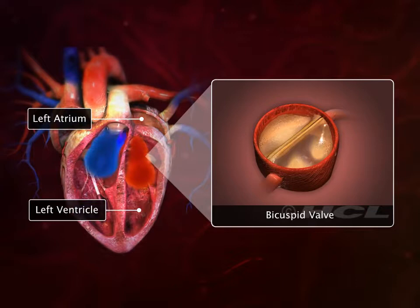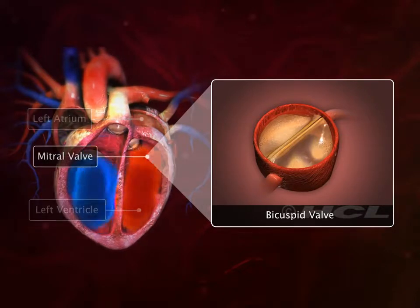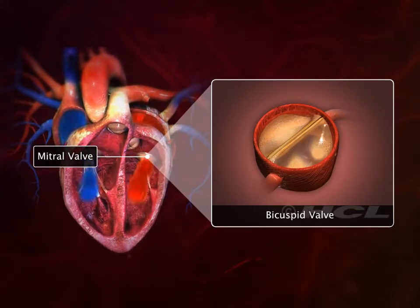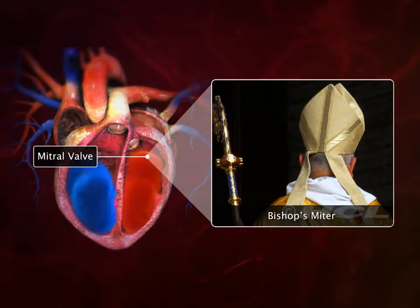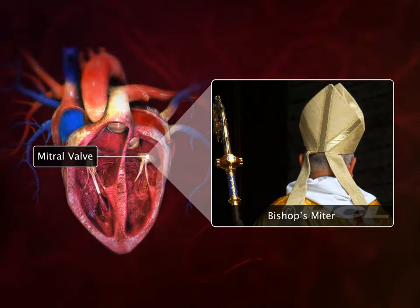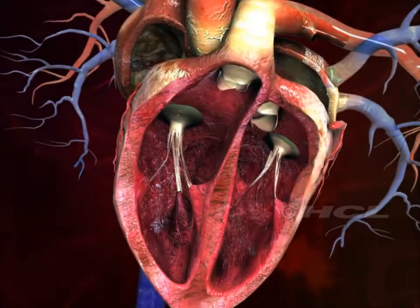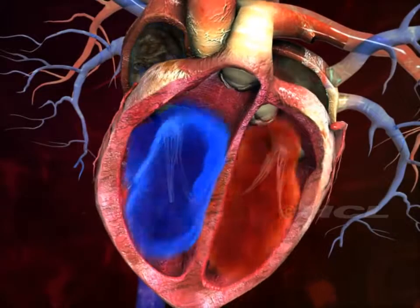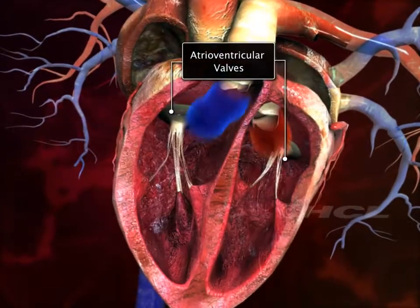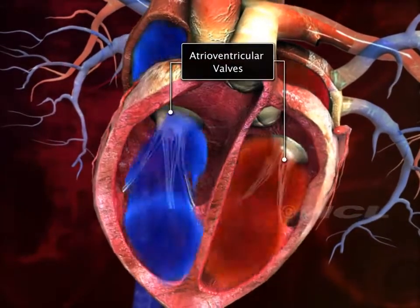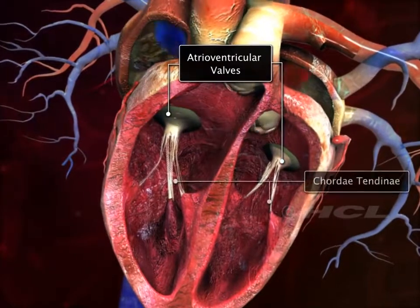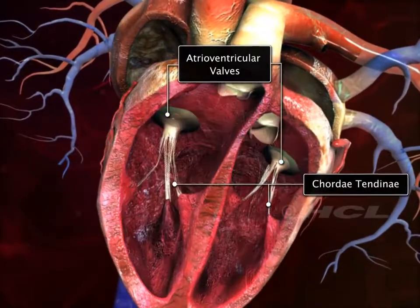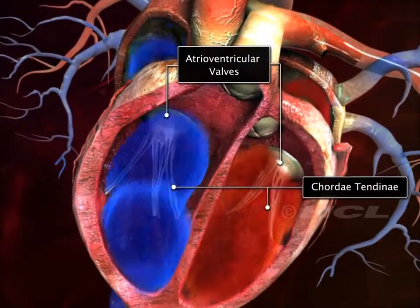The bicuspid valve is also called the mitral valve because of its resemblance to a bishop's two-sided mitre, or hat. The leaflets of these atrioventricular valves are connected to fibrous tissue called the chordae tendineae, which in turn are attached to papillary muscles.